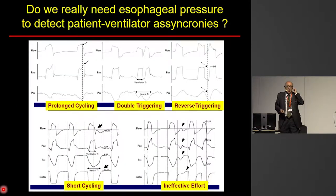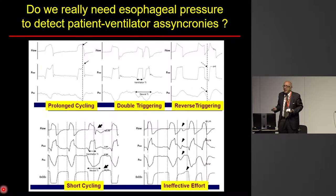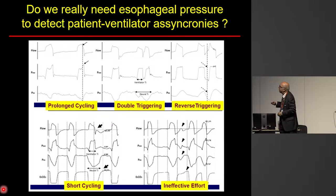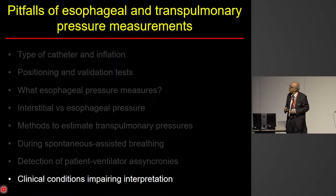Do we need esophageal pressure to detect asynchronies? My feeling is that you do not need esophageal pressure to look at asynchronies. For example, one of the most common — ineffective effort — can be easily detected just by looking at airway pressure swings during expiration or by the flows during expiration, without any need for esophageal pressure.